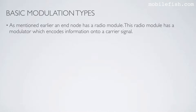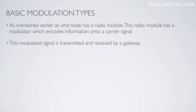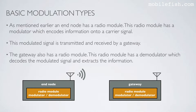As mentioned earlier, an end node has a radio module. This radio module has a modulator which encodes information onto a carrier signal. This modulated signal is transmitted and received by a gateway. The gateway also has a radio module with a demodulator which decodes the modulated signal and extracts the information.